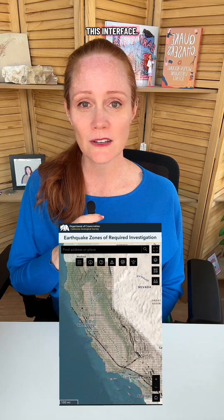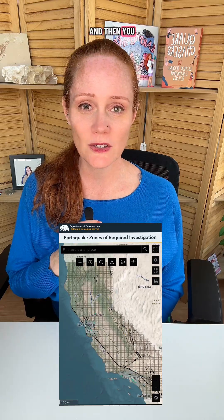If you want to see these kinds of maps from the California Geological Survey, look up 'earthquake zones of required investigation,' and that will take you to this interface where you can look all around California.